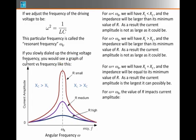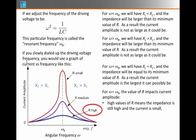For omega equals omega R, the value of the resistance actually impacts the current amplitude. If you think about it, when R is really big, then even though Z is its minimum possible value, it's still a pretty big number, and then the current amplitude can't be all that big, even at the resonant frequency.